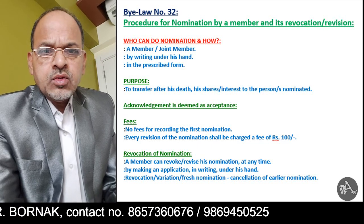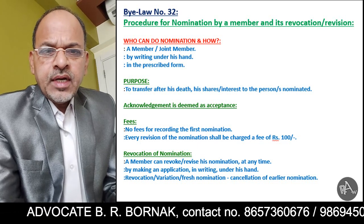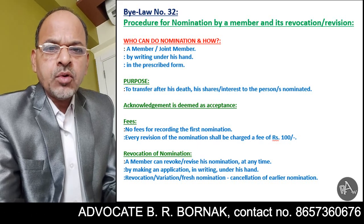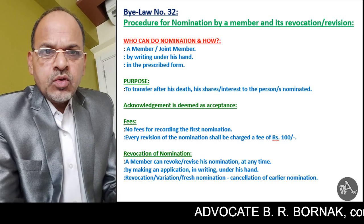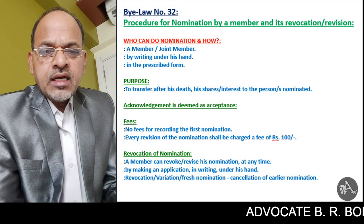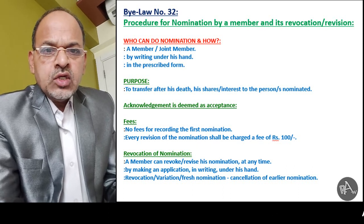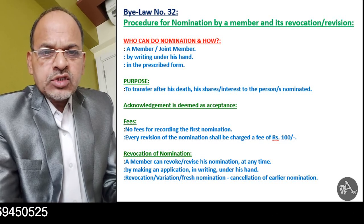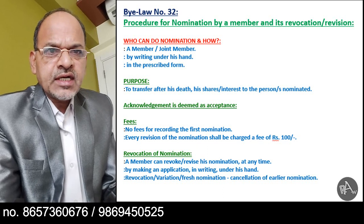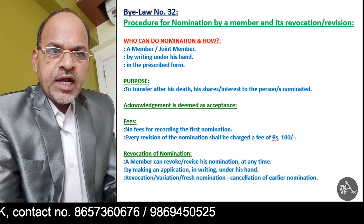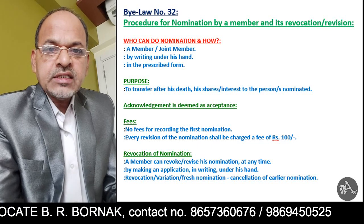The mode of nomination must be by writing under his hand in the prescribed form. To submit nomination to be recorded in the record of the society, there is a prescribed form. If we refer appendix 14, that prescribed form is appendix number 14 given in the bylaws. In the prescribed form, whatever details are there, those details are required to be filled in writing by the member concerned. The nomination form is required to be submitted to the society. Recording of nomination form in the record of the society — we are going to see that in bylaw number 33.